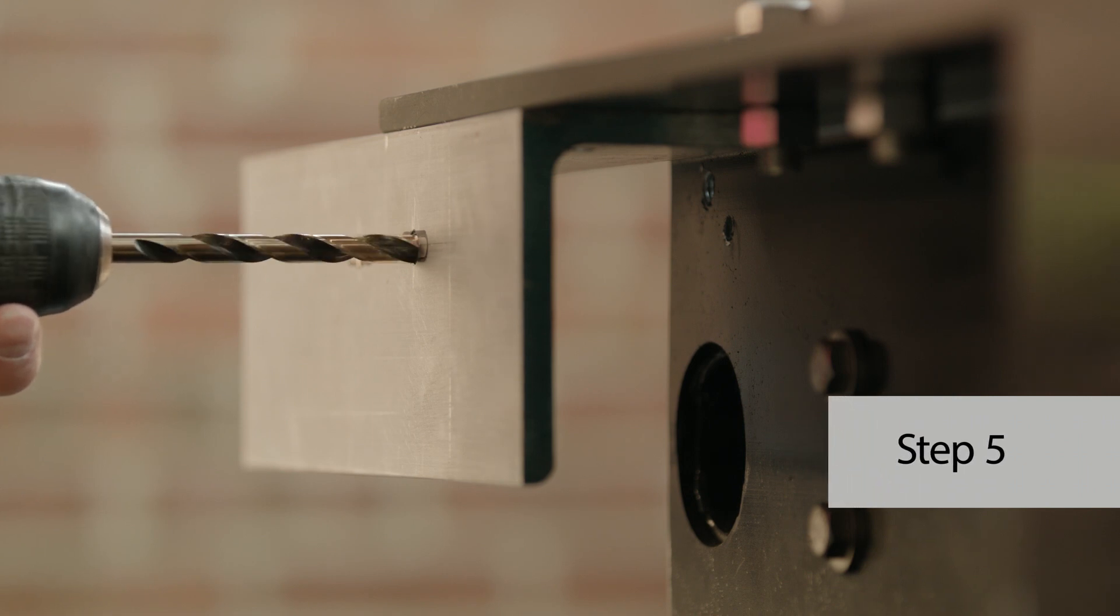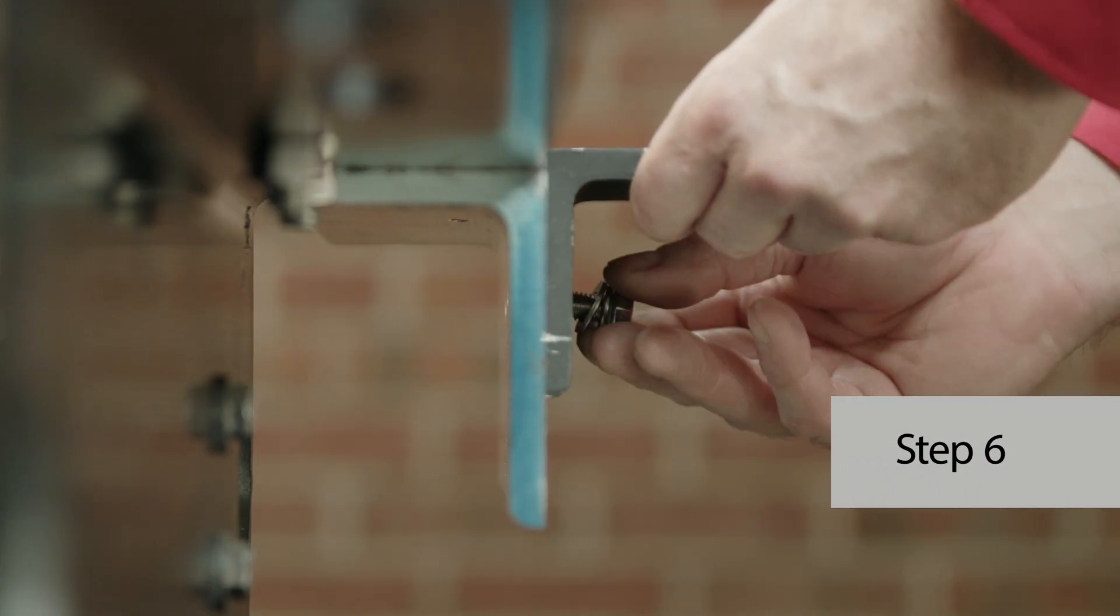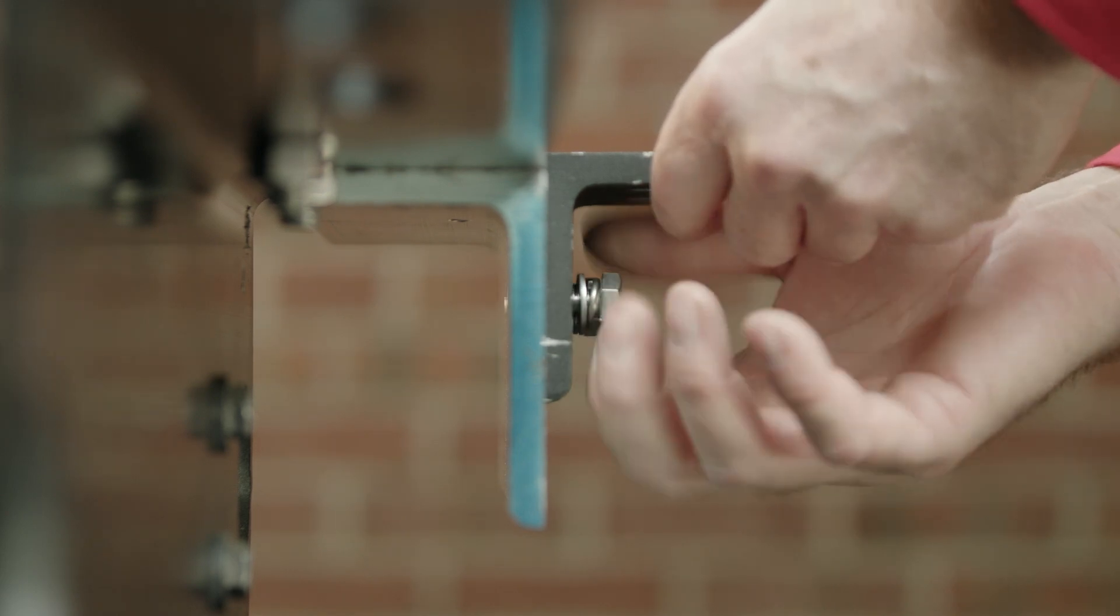Step five, drill and tap all mounting holes as required. Step six, mount the brackets to the frame using the appropriate fasteners with the holes roughly centered in the slots.